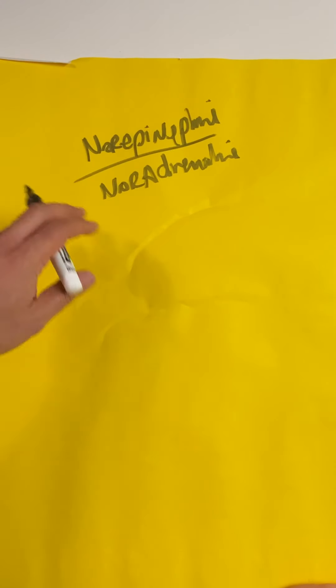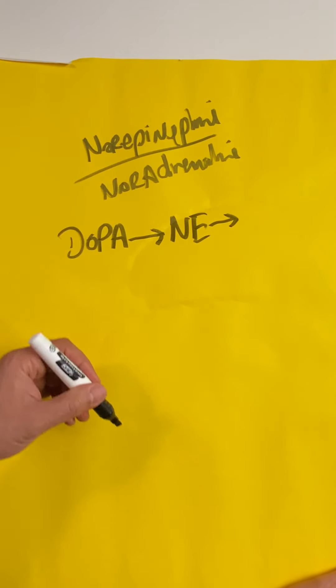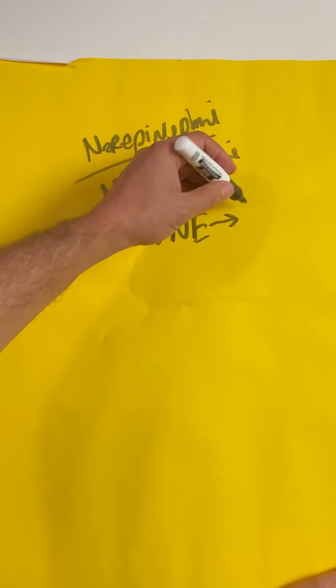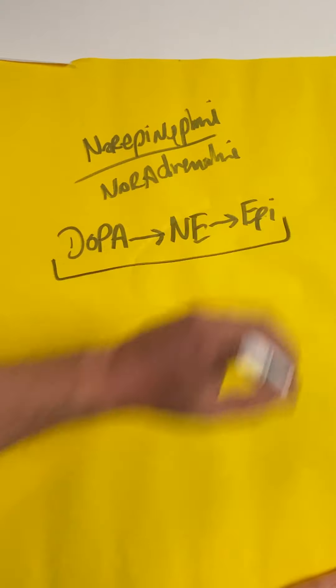Before I tell you why norepinephrine is the best vasopressor, I want to give you a bit of background into what it actually does. The precursor to norepinephrine is dopamine, and dopamine is broken down into norepinephrine. Just a little medical trivia: norepinephrine can be further broken down into epinephrine.